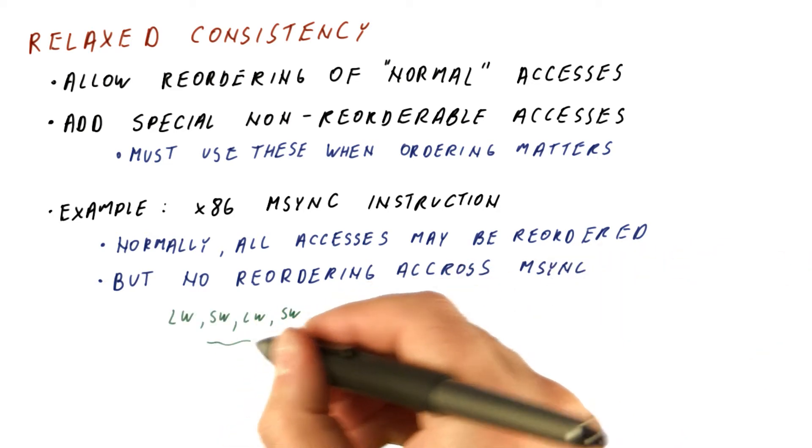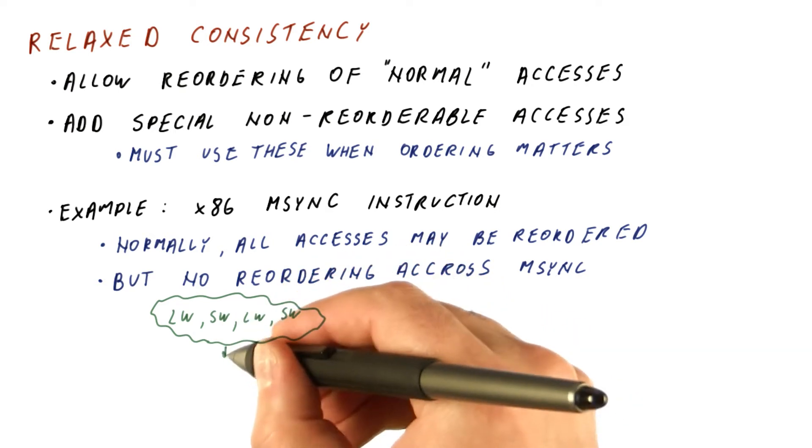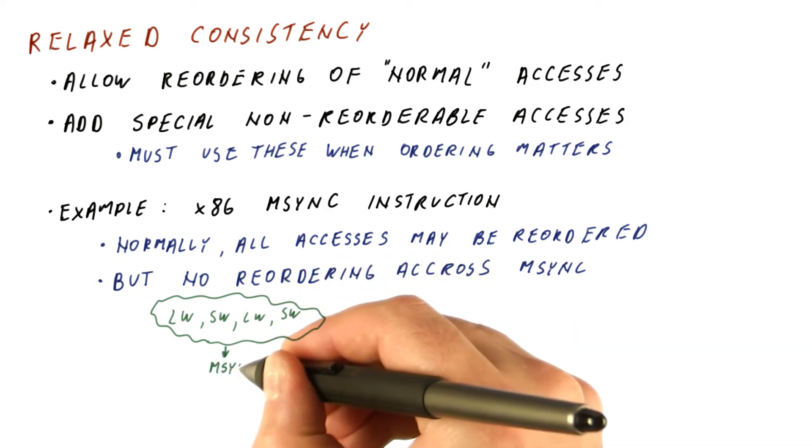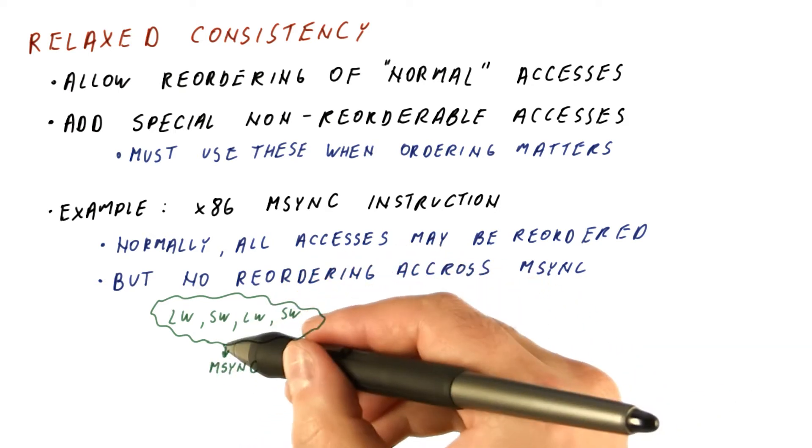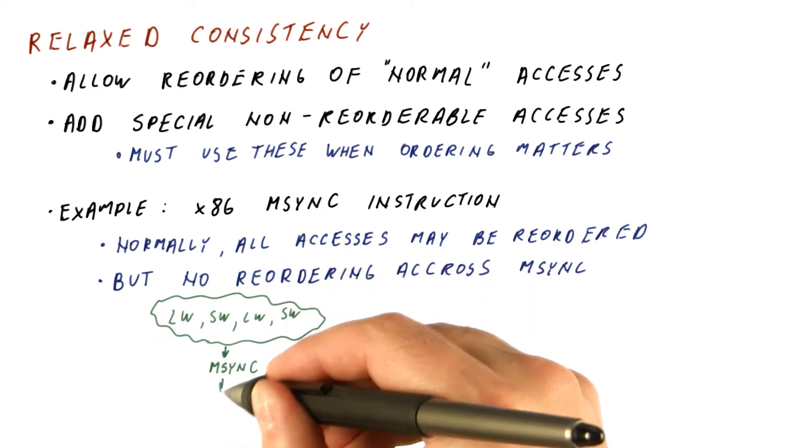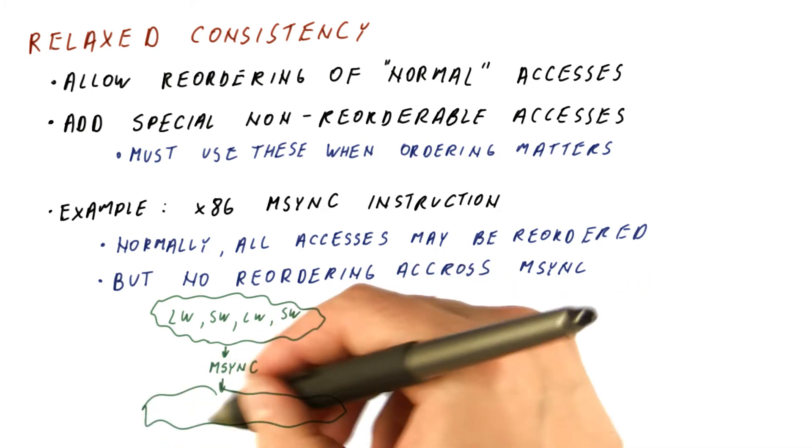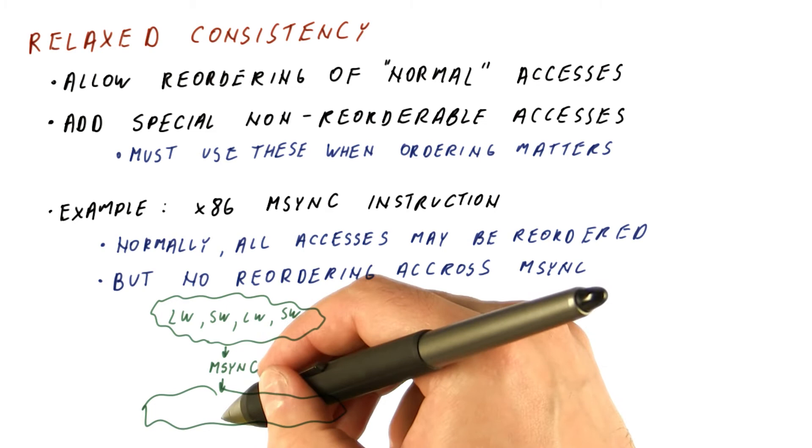So we can have any accesses that we want reordered anywhere in here, but in program order then comes the mSync instruction. The processor guarantees that all of these are going to be done before we do mSync, and that the mSync will be done before we begin the next cloud of instructions that can again be ordered with each other.